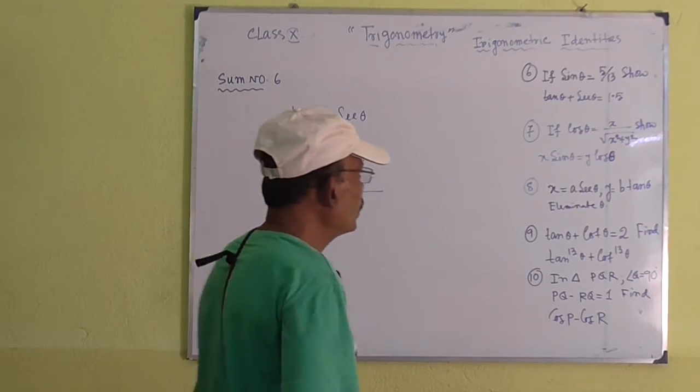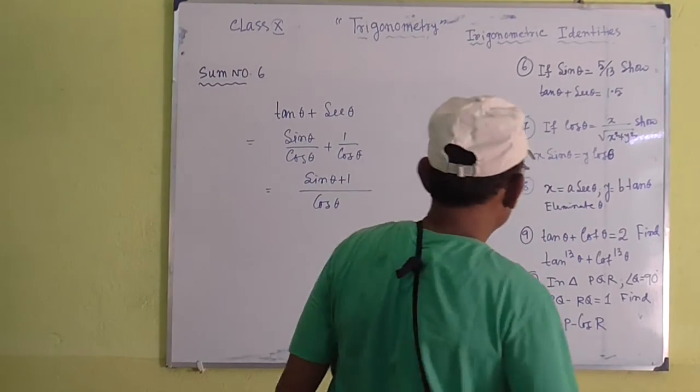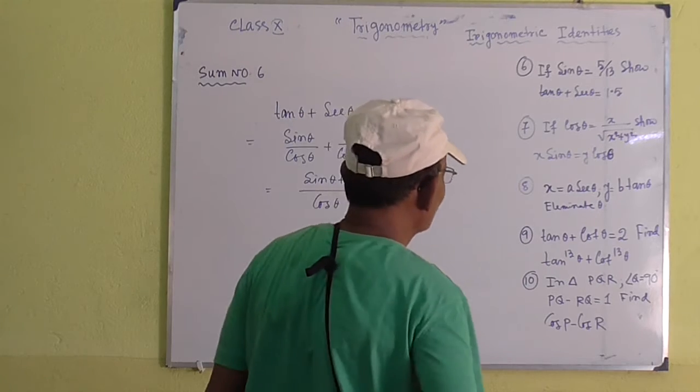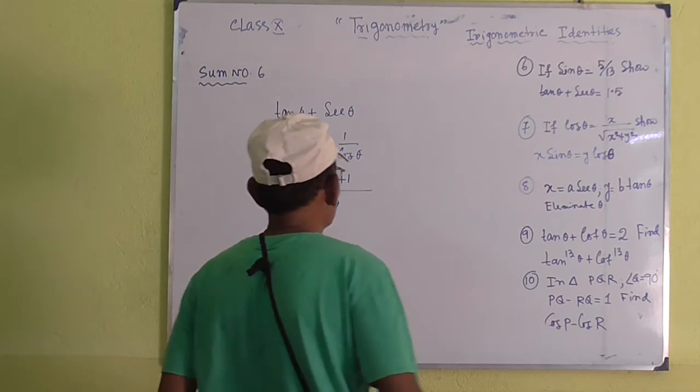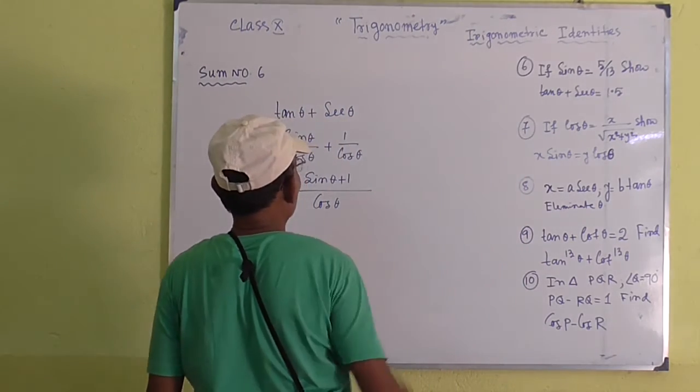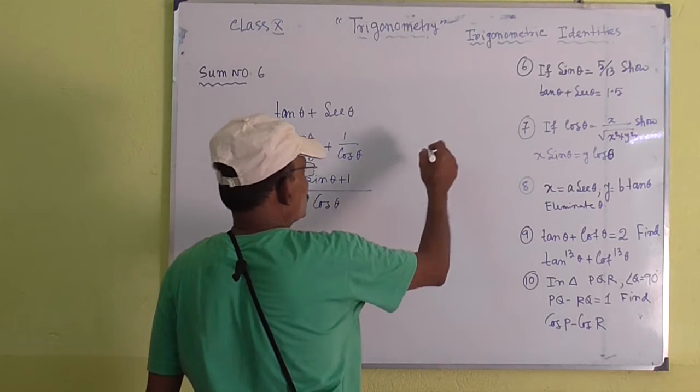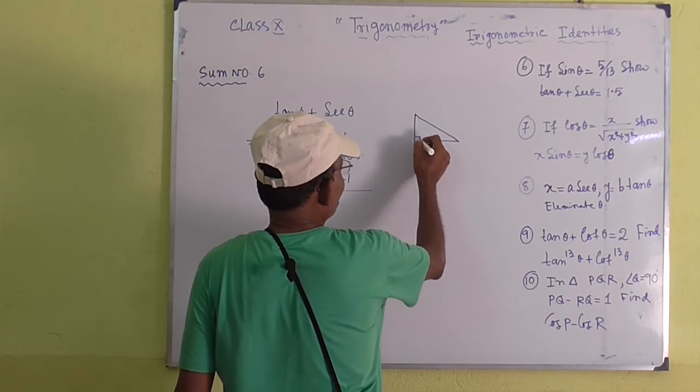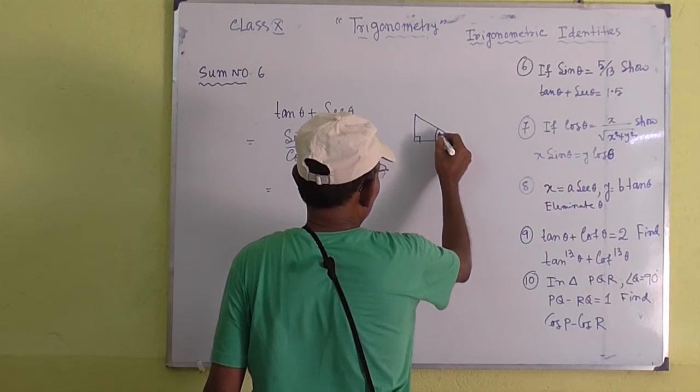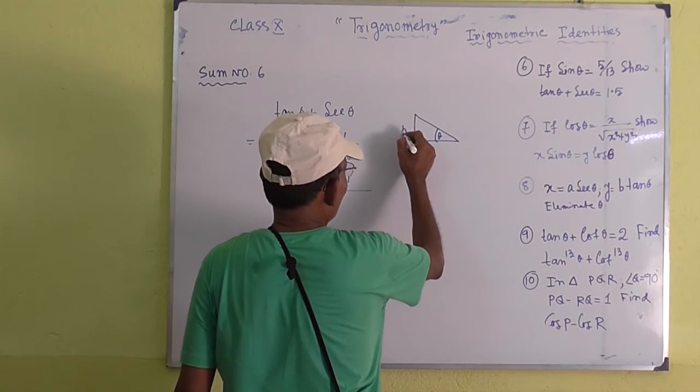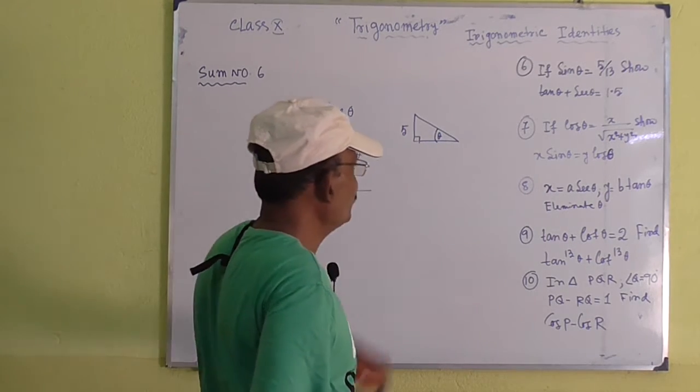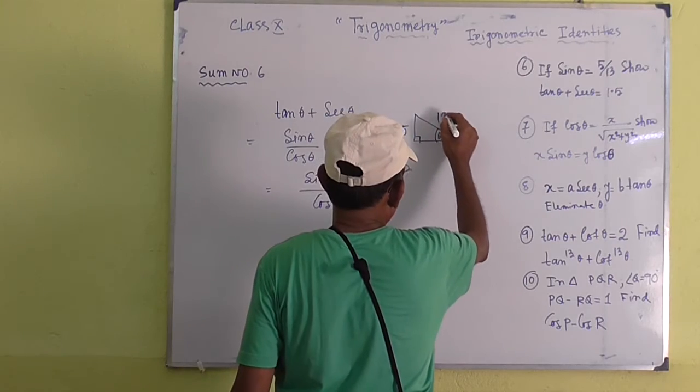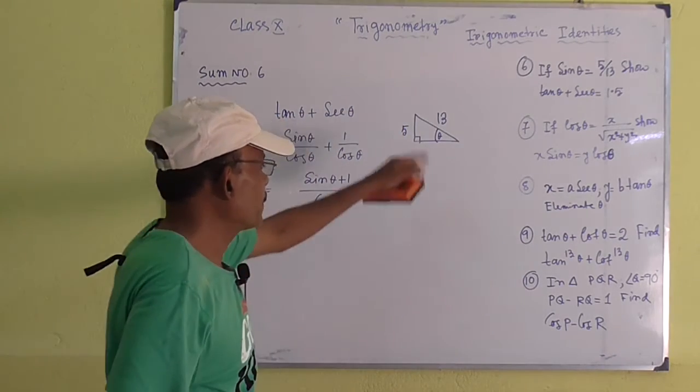Now we have to find the value of cos theta from sin theta equals 5 by 13. So let us take this as a right triangle. Here, this is theta.